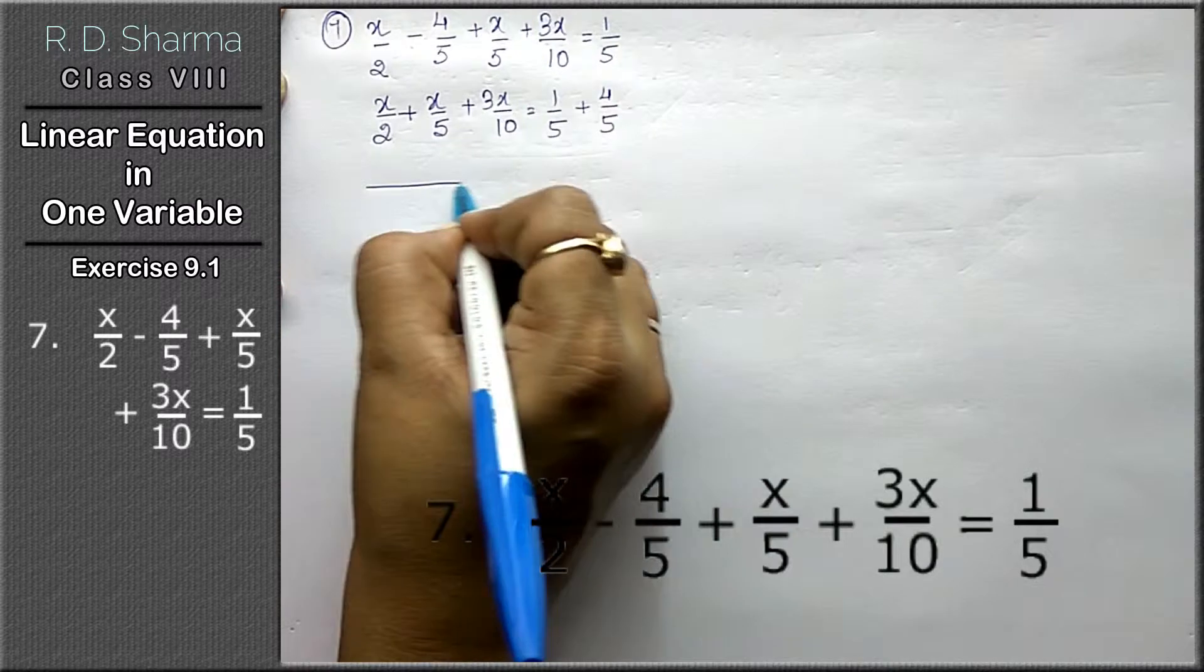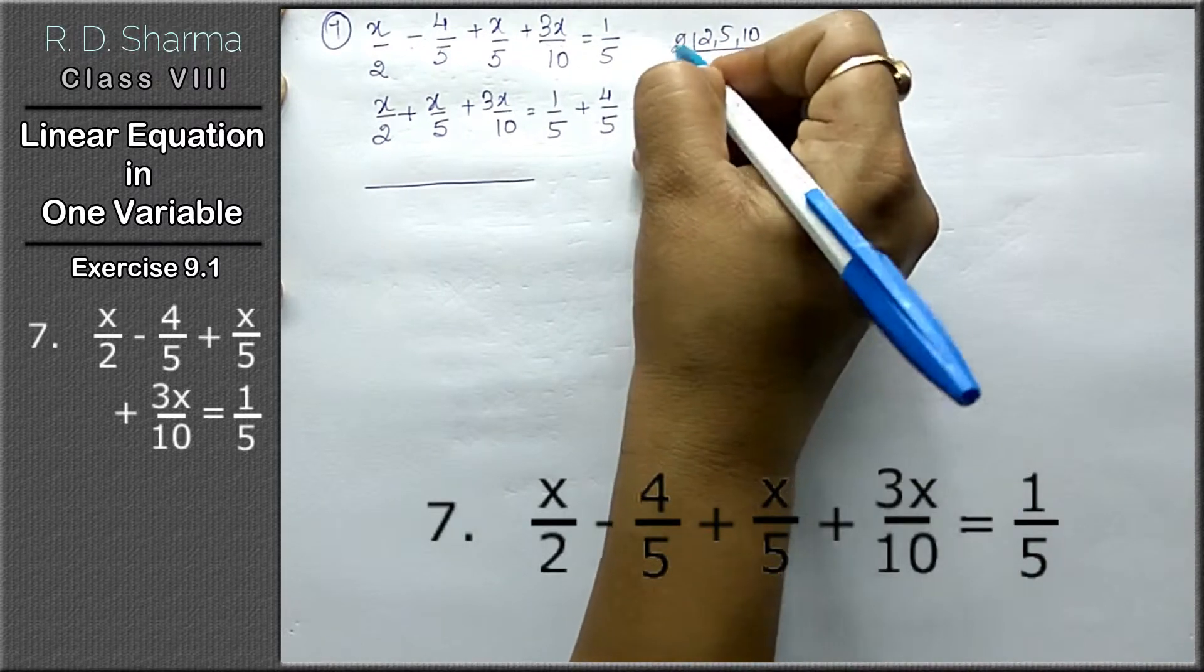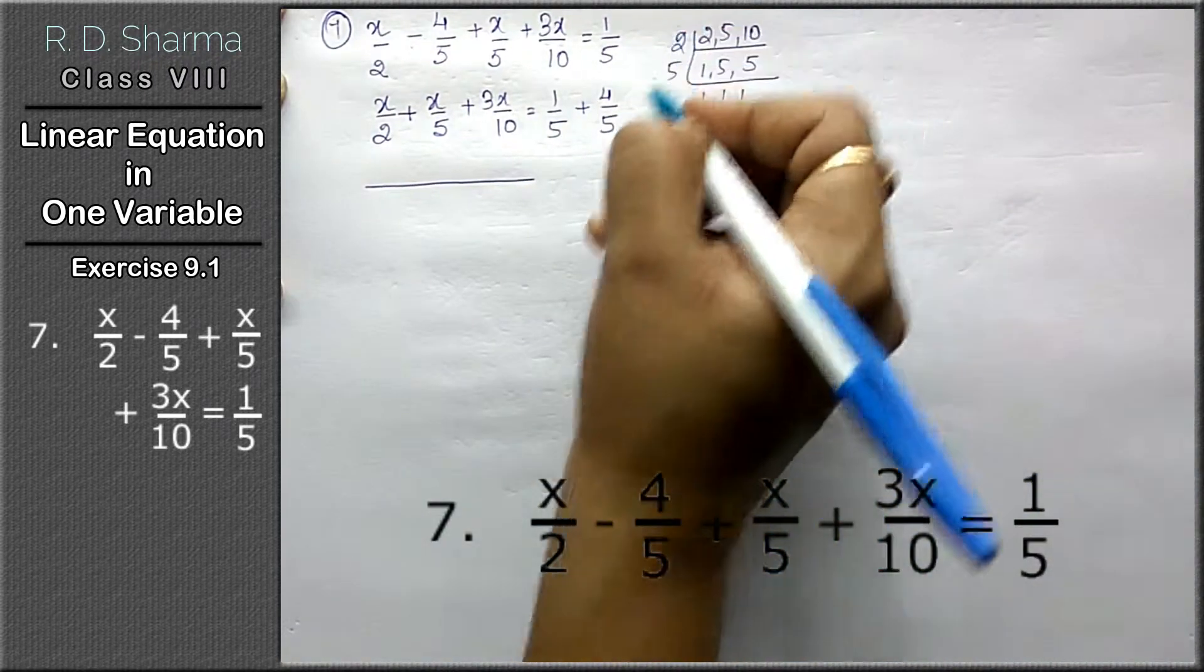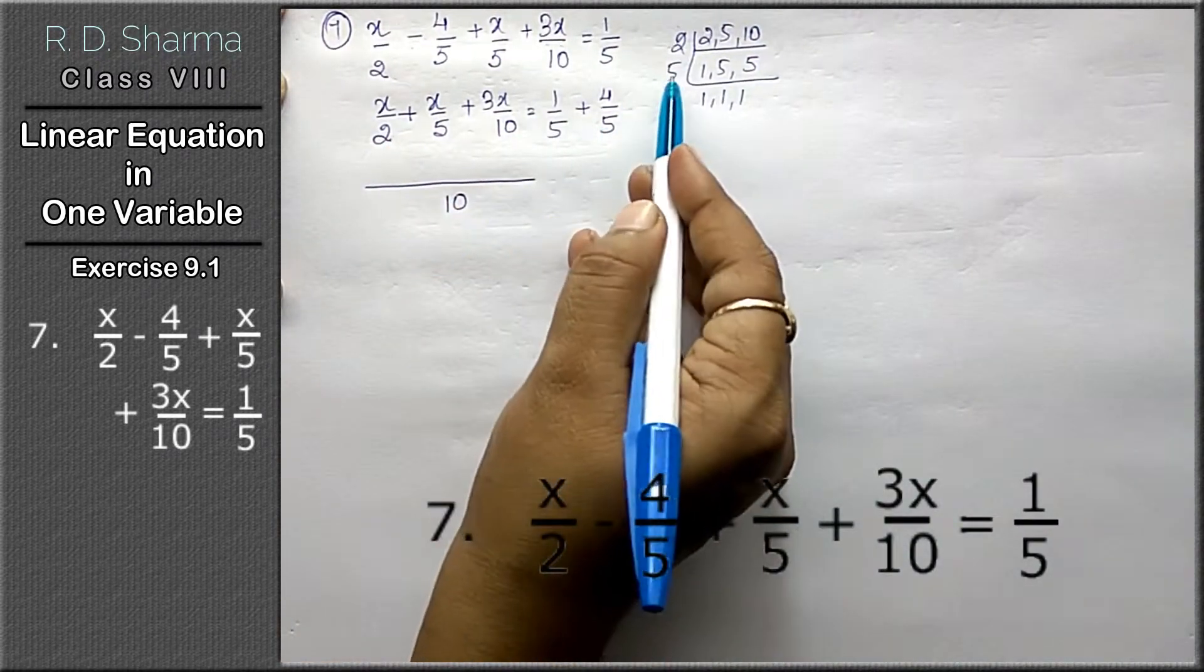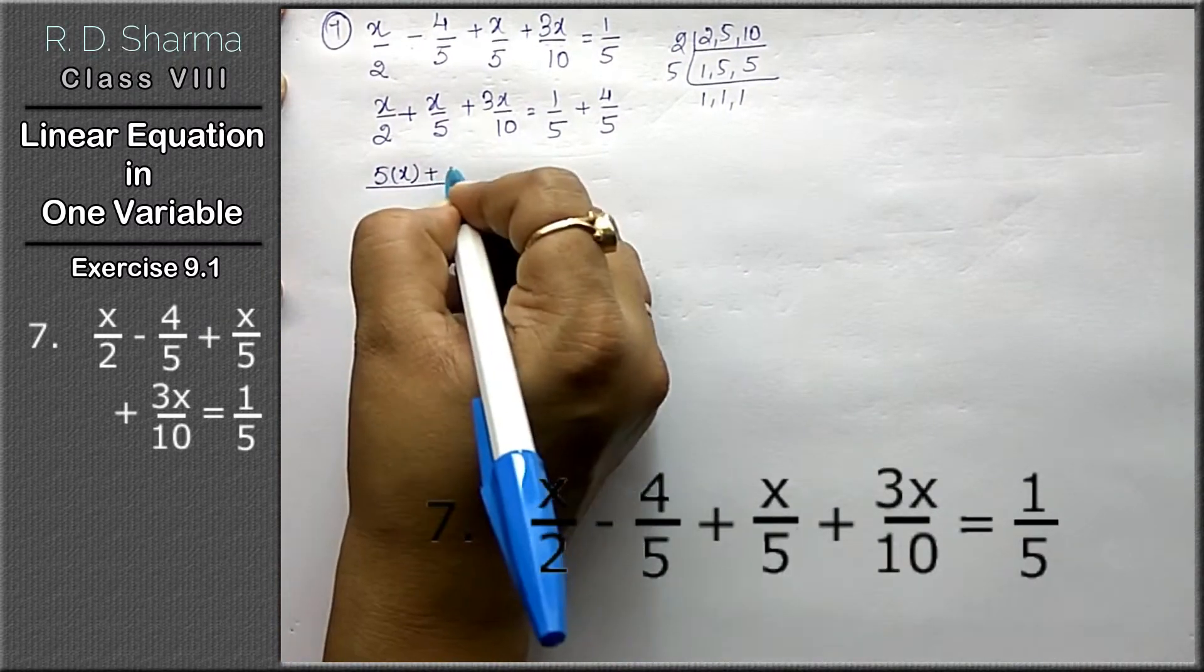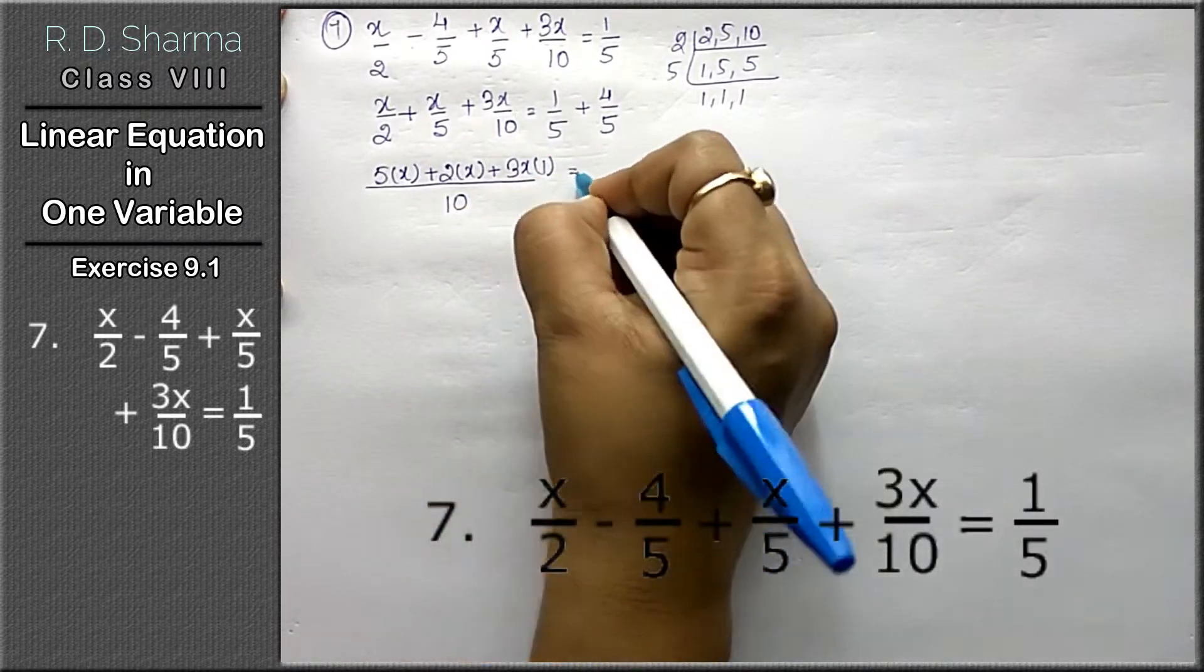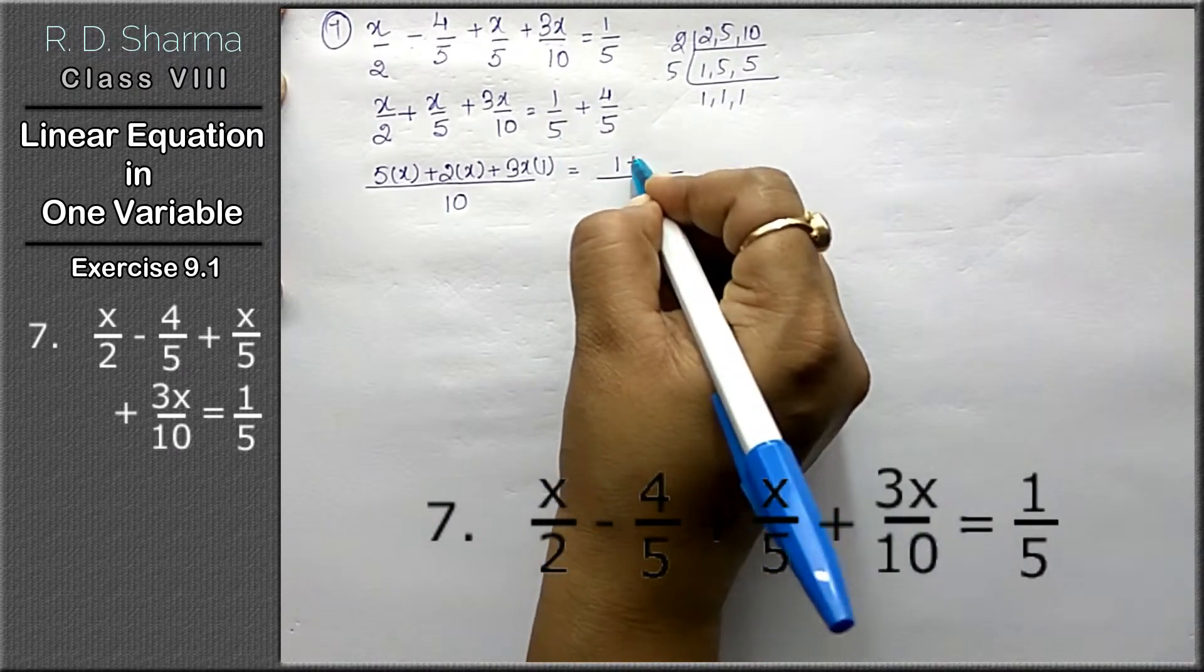Right friends, now we will take the LCM of 2, 5, and 10. 2 times 5 is 10, so 10 is the LCM. 10 divided by 2 is 5, so 5 will get multiplied by x. 10 divided by 5 is 2, so 2 will get multiplied by x. And 10 divided by 10 is 1, so 3x gets multiplied by 1. This equals to 5 is the LCM on this side, 1 plus 4.